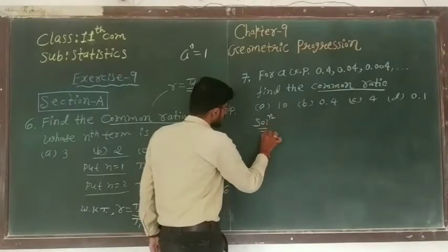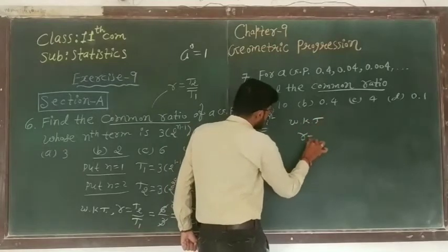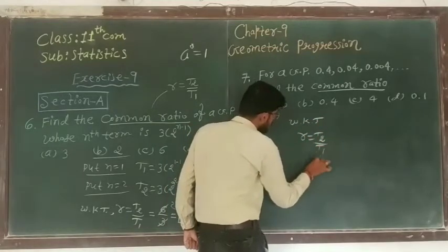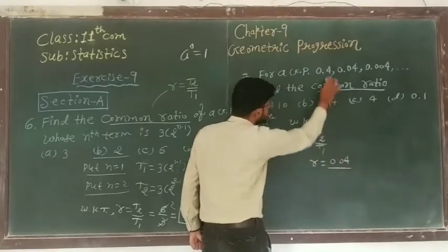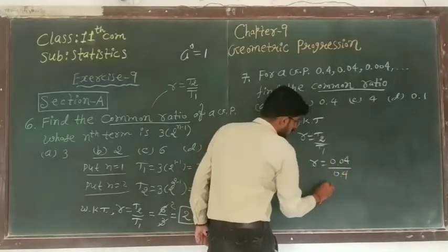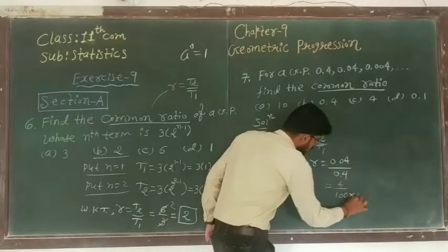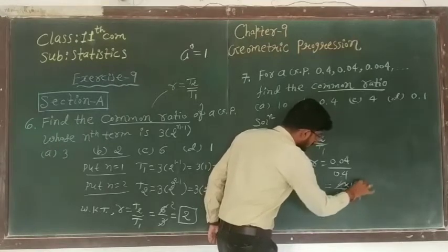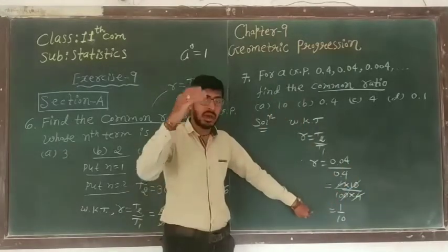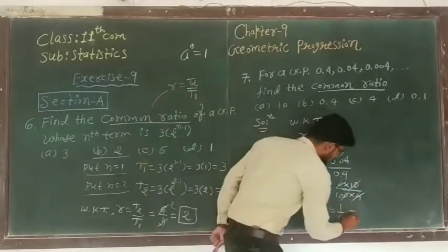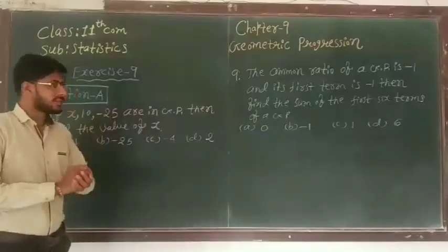Solution. We know that r equal to t2 upon t1. R equal to second term is 0.04 upon first term 0.4. We know that decimal points, 4 upon 100 divided by 4 upon 10. 4 cancelled, 10 cancelled. So 1 by 10. So our answer is 1 by 10. This is nothing but 0.1.